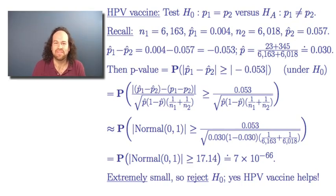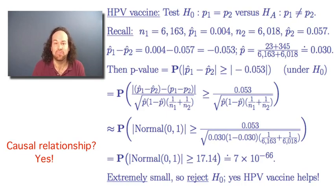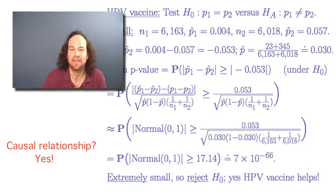We conclude that the HPV vaccine did indeed help: the true incidence of infection was unquestionably lower for women who received it. Moreover, because this was a randomized study, we can conclude that the vaccine actually caused the lower infection rate — not merely a correlation. This shows how to study two independent samples of proportions using confidence intervals and hypothesis tests. Next, we'll consider how to do the same thing when comparing means instead of proportions.